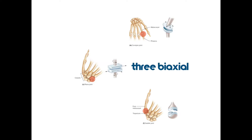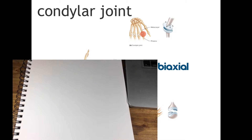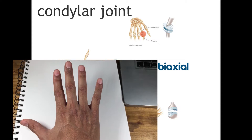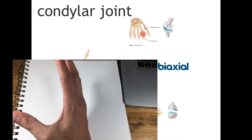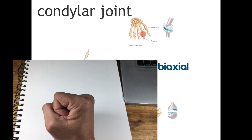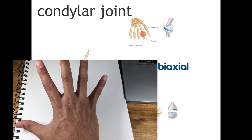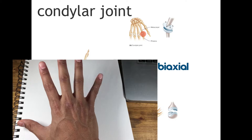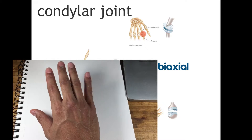With the condylar joint, notice the oval-shaped condyle of one bone and how it articulates with the elliptical cavity of the other. You'll find this joint at the metacarpals and the phalanges — essentially at your knuckles. You can close your hand into a fist, which acts somewhat like a hinge, and then with your hand wide open you can fan your fingers out and close them. That biaxial movement — closing like a hinge and fanning out — is the benefit of the condylar joint.